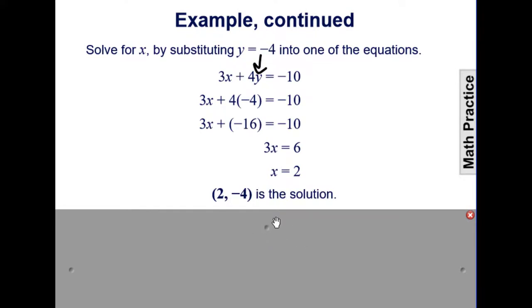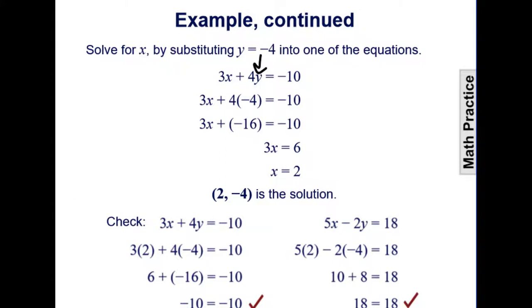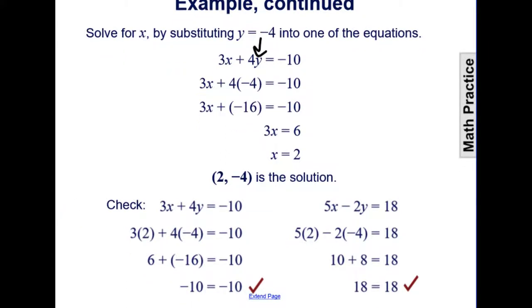So we get, again, 2 negative 4 as our solution, and it works as our check as it did before in both equations. So whether you eliminate the y's or the x's, it's up to you. You have to make that decision.